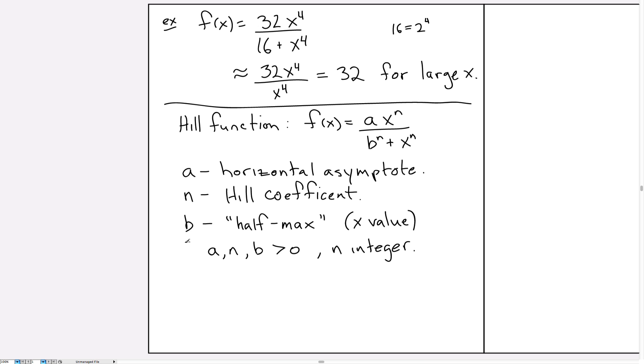Let me say a few words about why these are given these names. So first, the horizontal asymptote: if you plug in large values of x, then we can omit the b^n from this expression. The x^n's cancel, and we're left with just a. So as before, where we found 32 was the horizontal asymptote, that's what we find a is in general for this type of expression. The Hill coefficient: what does the Hill coefficient tell us?